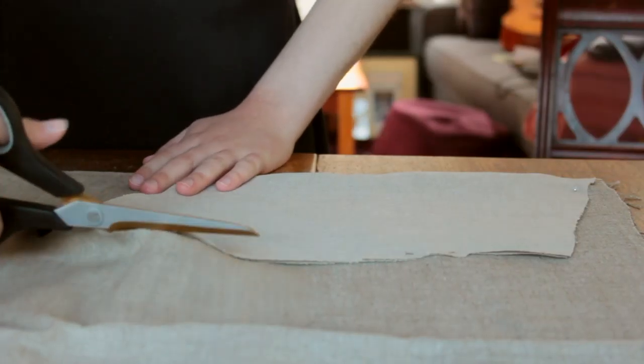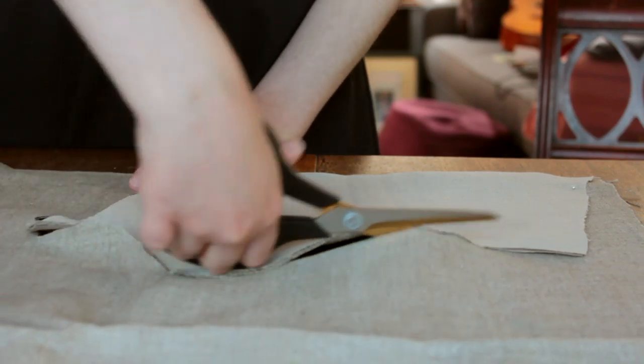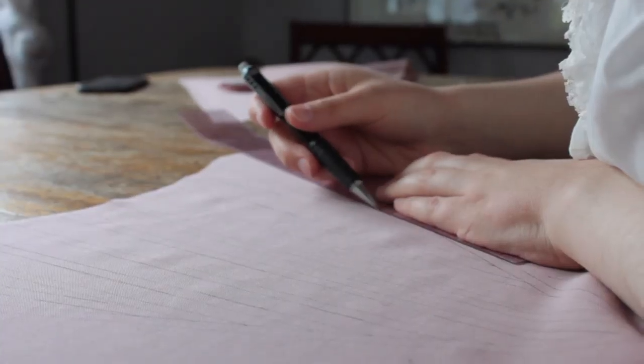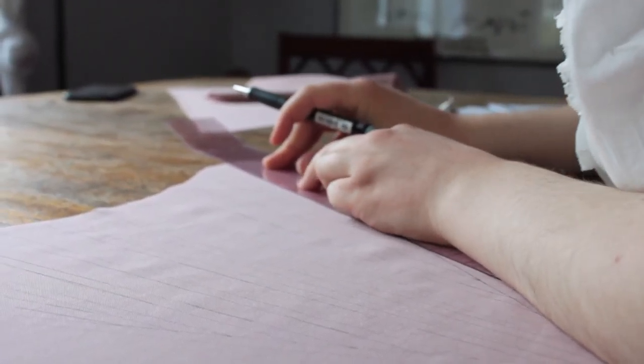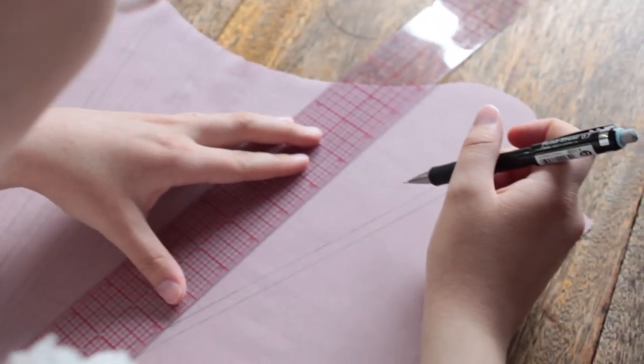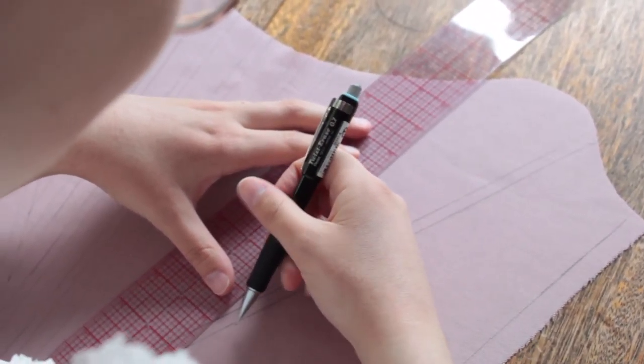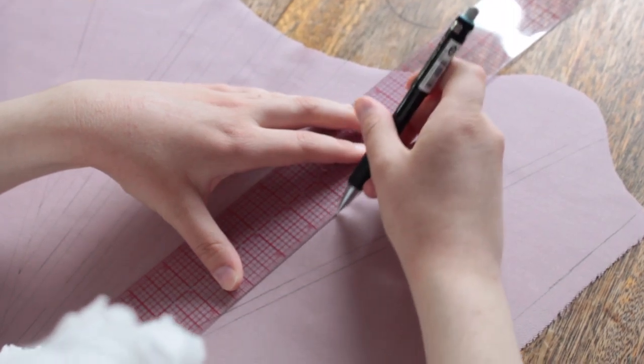The first step in making these stays was cutting out the fabric. Once all the pieces were cut out, I traced boning channels onto the outer layer of pink wool using a pencil. Extant stays often exhibit visible pencil lines that were used as a guide for the stitches, so I didn't worry about my visible pencil lines.